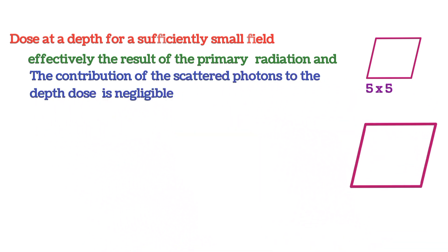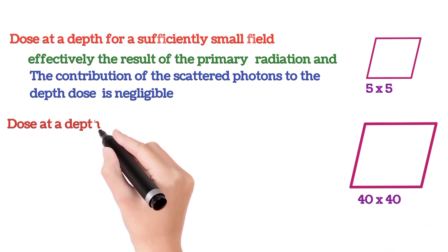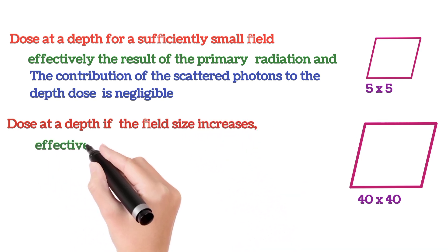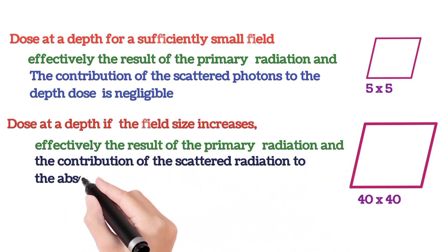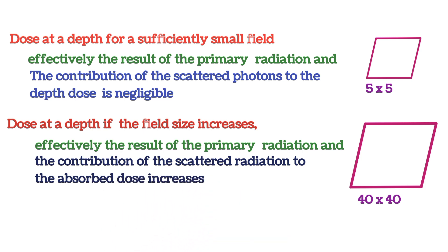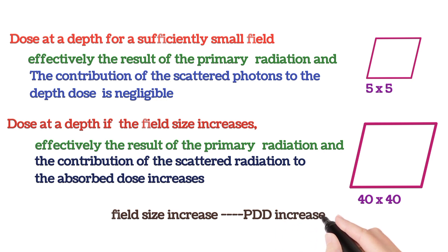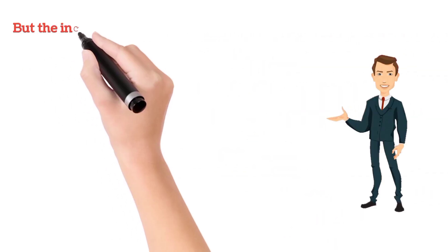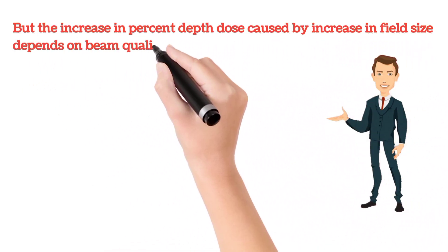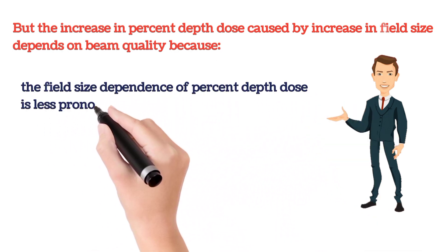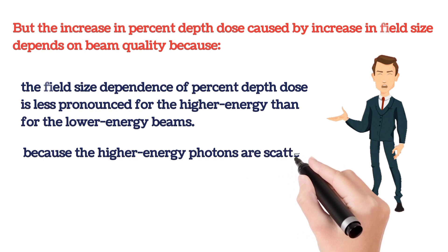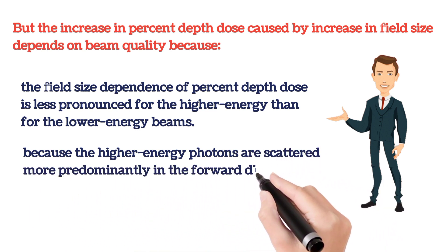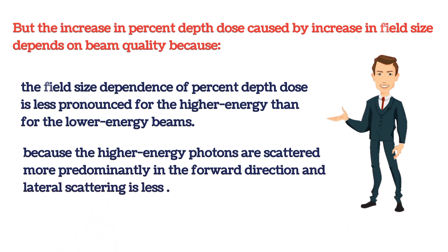When we increase the field size, at the same depth, PDD increases because dose deposition is the result of primary radiation as well as scattered radiation, so overall dose deposition increases when we increase the field size. The field size dependency depends on beam quality. Field size dependency is less pronounced for high energy beams than for lower energy beams, because higher energy photon beams are scattered more predominantly in the forward direction, and scattering in the lateral direction is less.